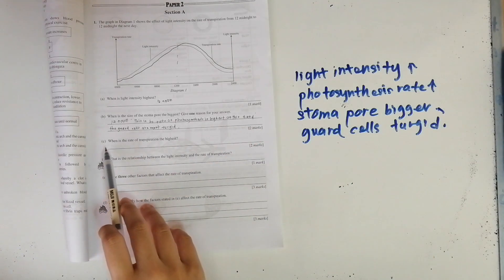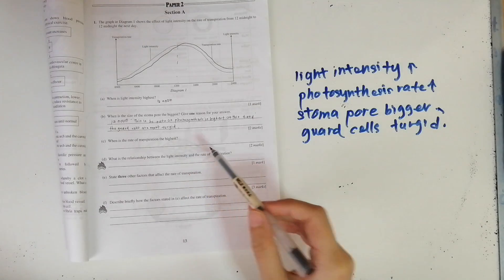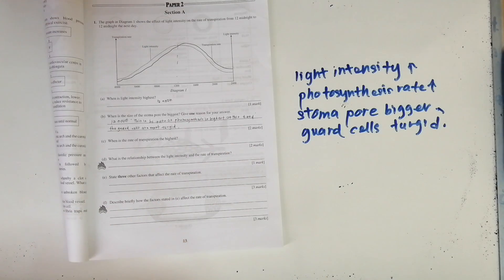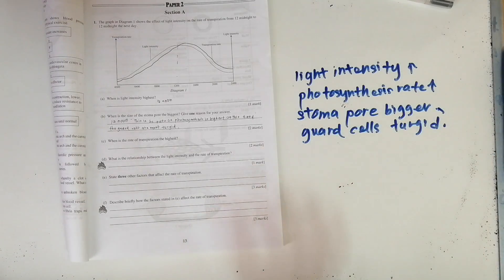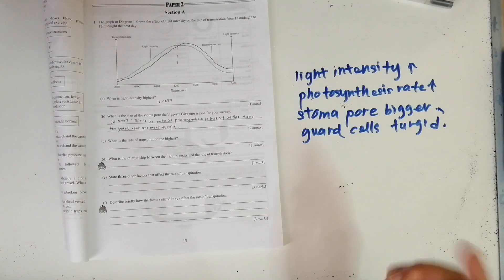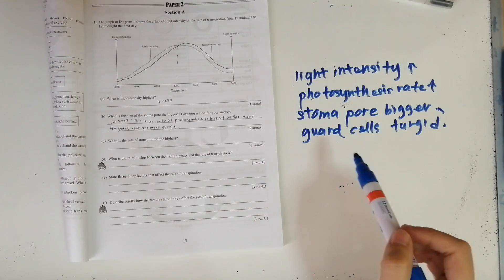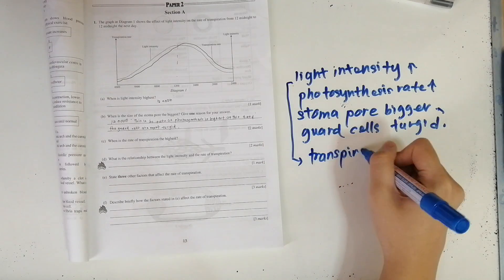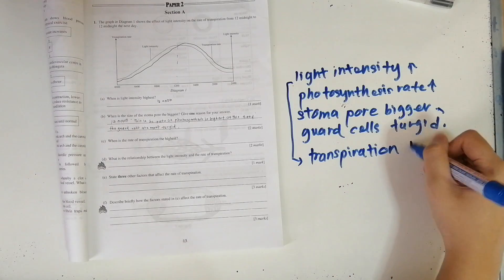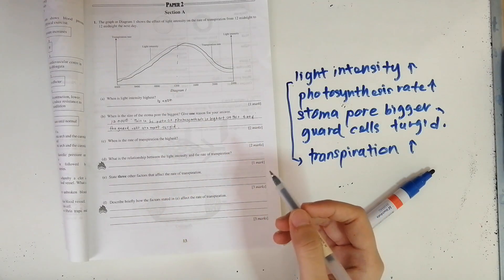Let's move on to see when is the rate of transpiration the highest. The answer is in the afternoon as well, because it is all interrelated — when the light intensity increases, the photosynthesis rate increases, the stomatal pore becomes bigger, and the transpiration rate increases as well. Light intensity actually affects the transpiration rate also, so the answer would be in the afternoon.